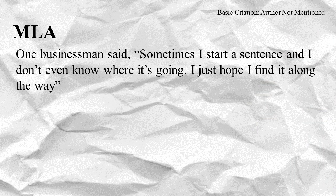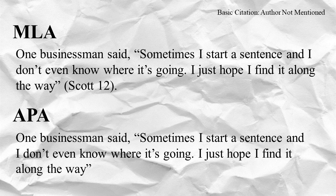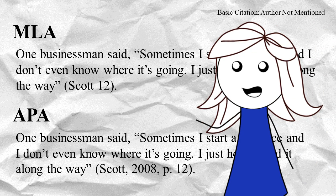In MLA, there are two basic components to every citation: the author's name and the page number, with no commas in between. APA adds the year, the letter P in front of the page number, and some commas in between. That's the basic citation if you don't mention the author in the sentence at all. Notice the period goes after the citation, not in the quotation marks.